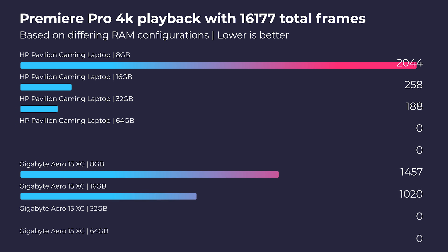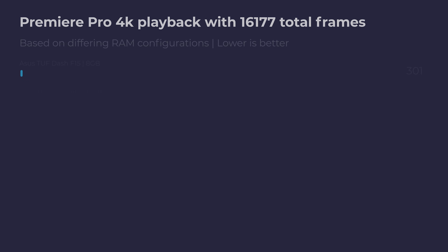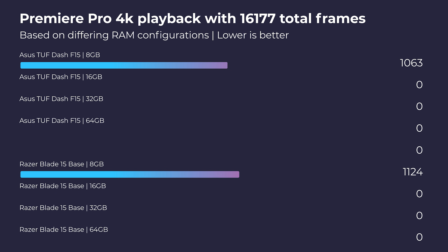Here is a number of computers with different configurations, all based on 16,177 frames in total for the project. This chart shows how many frames each computer dropped with the different RAM configurations. That sweet spot really starts at 16 gigs of RAM. I ran these tests with a single channel 8 gig stick for the 8 gig test, so if you have two 4 gig sticks in dual channel, you might see slightly fewer dropped frames, but as a whole you're going to see very similar results with 8 gigs of RAM.